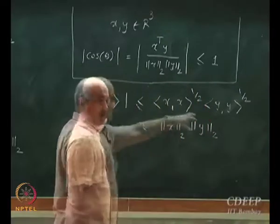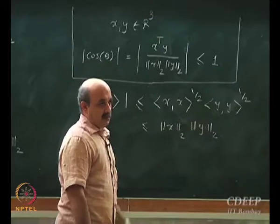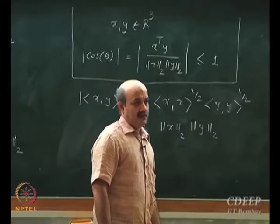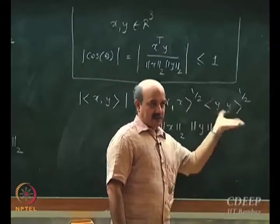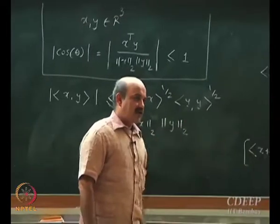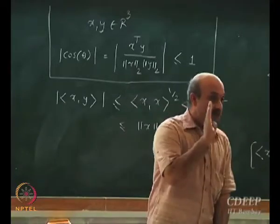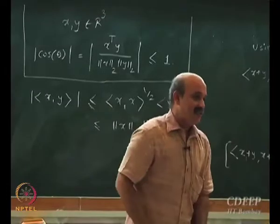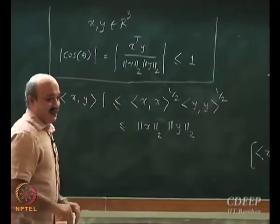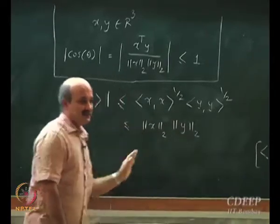This product of two positive numbers is greater than the positive number on the left. There is only one way to use it — when you add a higher number on the right-hand side, you get an inequality. We proved Cauchy-Schwarz inequality by logical arguments in the previous lecture; no assumptions were made.